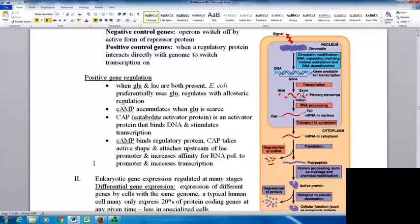Cyclic AMP accumulates when glucose is scarce. CAP, the catabolic activator protein, is an activator that binds DNA and stimulates transcription. Cyclic AMP binds the regulatory protein CAP, which takes the active shape and attaches upstream of the lac promoter, increasing RNA polymerase affinity and transcription. This ensures the cell uses glucose when available and lactose when necessary.